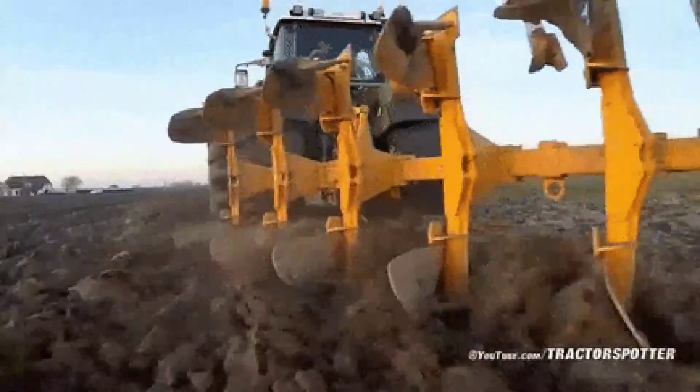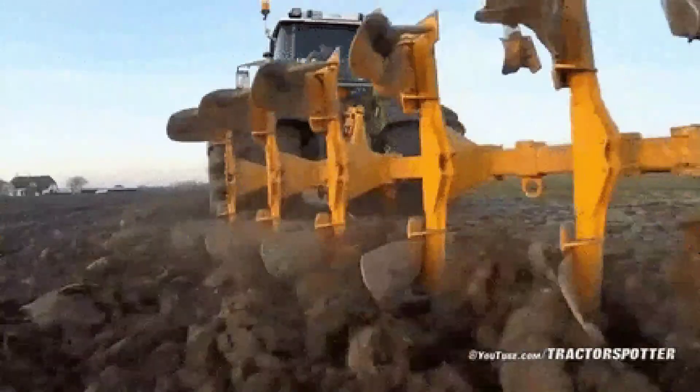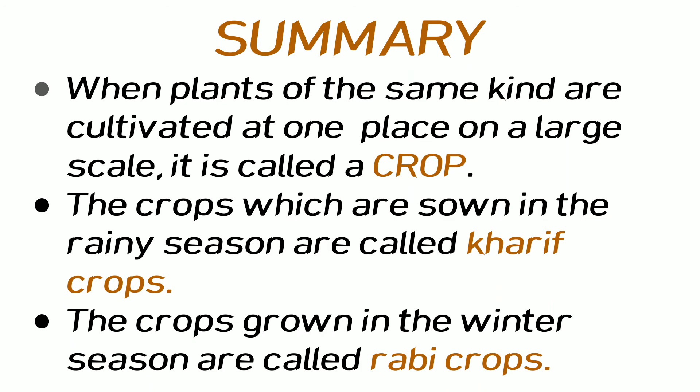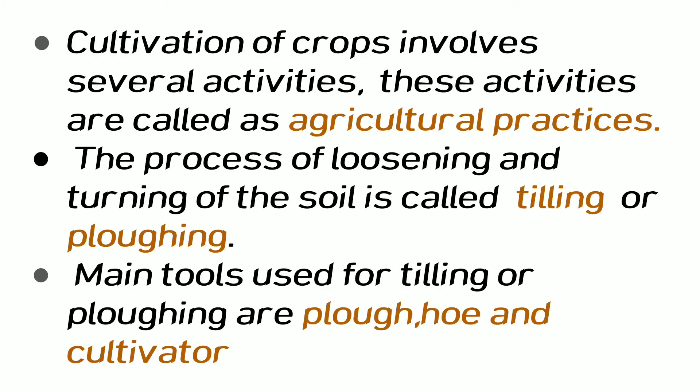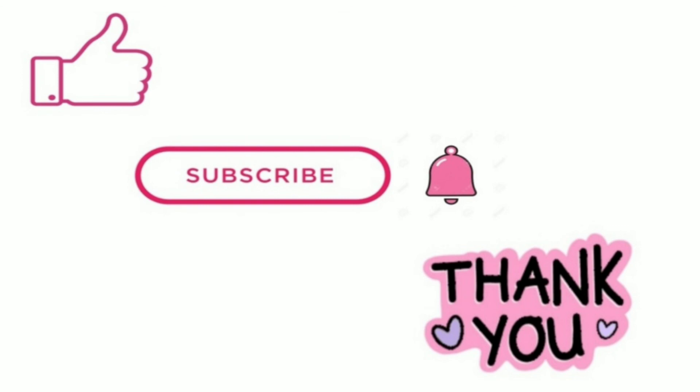Use of a cultivator saves labor and time. Now let us take a quick look at the summary. When the plants of the same kind are cultivated at one place on a large scale, it is called a crop. The crops sown in the rainy season are called Kharif crops, and those sown in the winter season are called Rabi crops. Cultivation of crops involves several activities called agricultural practices. The process of loosening and turning the soil is called tilling or ploughing, and the main tools used for this are the plough, hoe, and cultivator.